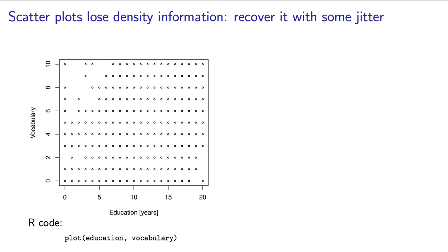On the left is a scatter plot showing data from 21,000 people. It illustrates their education level on the x-axis plotted against their vocabulary level. Notice that the points overlap, and we don't get an indication that there's 21,000 data points here.